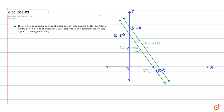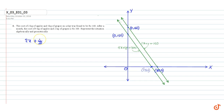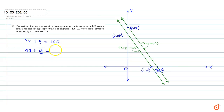Then the algebraic representation is: 2x plus y is equal to 160. In the second case we have 4x plus 2y is equal to 300. This is the algebraic representation.